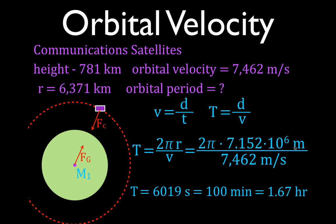So we did three things: we derived the equation for the orbital velocity, we calculated the orbital velocity of an object, and we calculated the orbital period — the time it takes to go once around the Earth. I hope you found that video helpful. If you did, please subscribe to my channel, give me a thumbs up, and leave a positive comment in the comment section below. Thank you very much for watching.